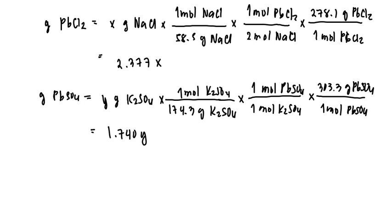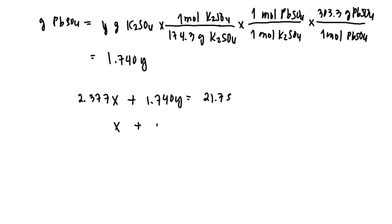As given, the mass of the solid is 21.75, so we say 2.377x plus 1.74y equals 21.75. Therefore we have two equations with two unknowns. The first one was x plus y equals 10.